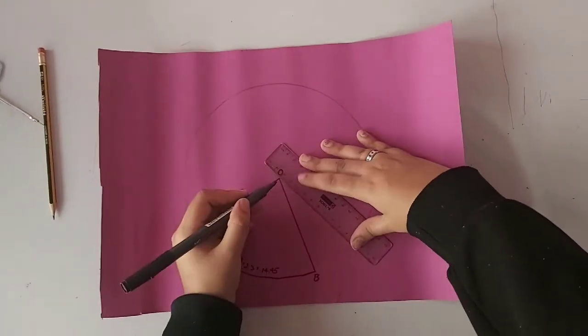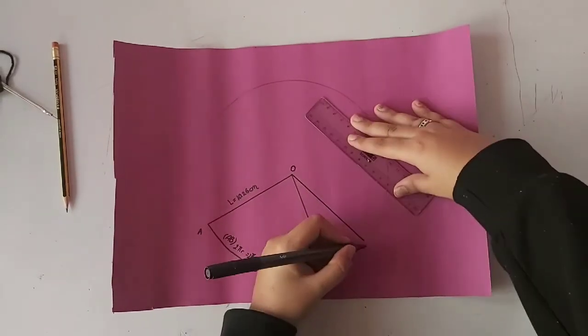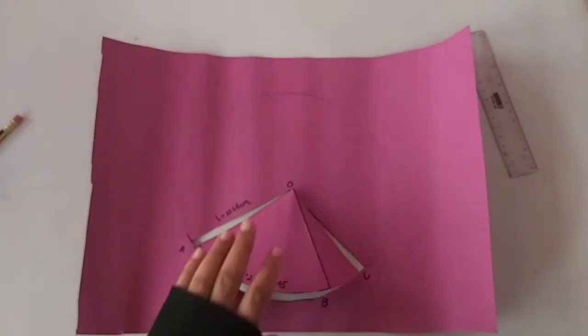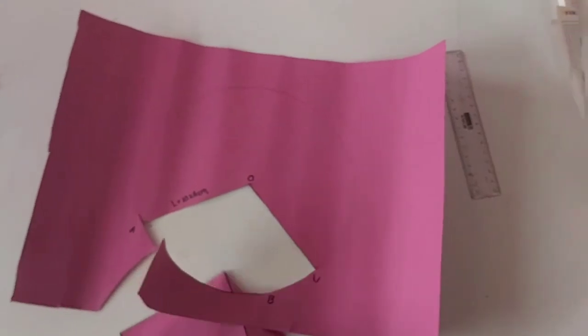Draw an additional line from the center a little away from point B. This will assist in forming the cone. Cut out the shape and form the cone.